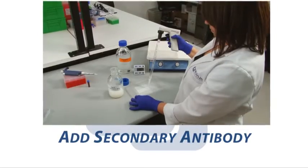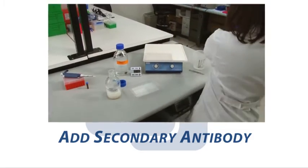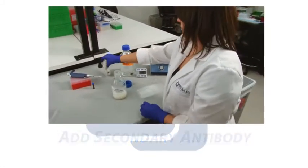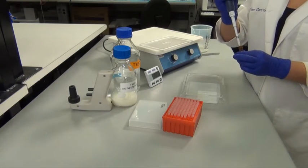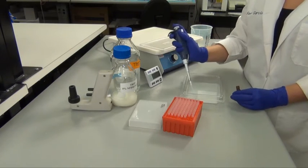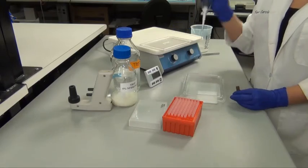After washing, dilute the secondary antibody and blocking solution and incubate the membrane for one hour at room temperature at the concentration recommended on the data sheet. In our example, the secondary is also conjugated to HRP for later detection.